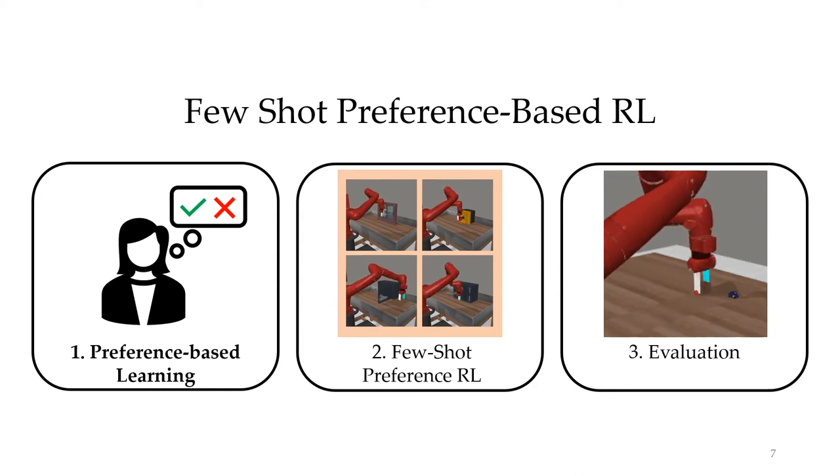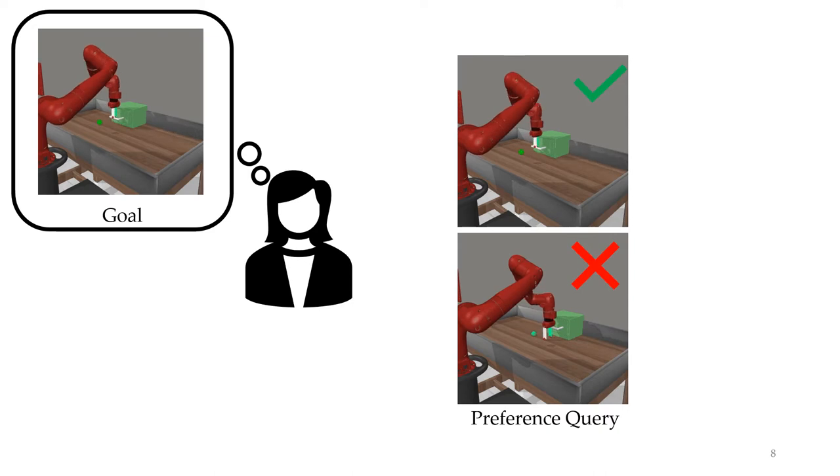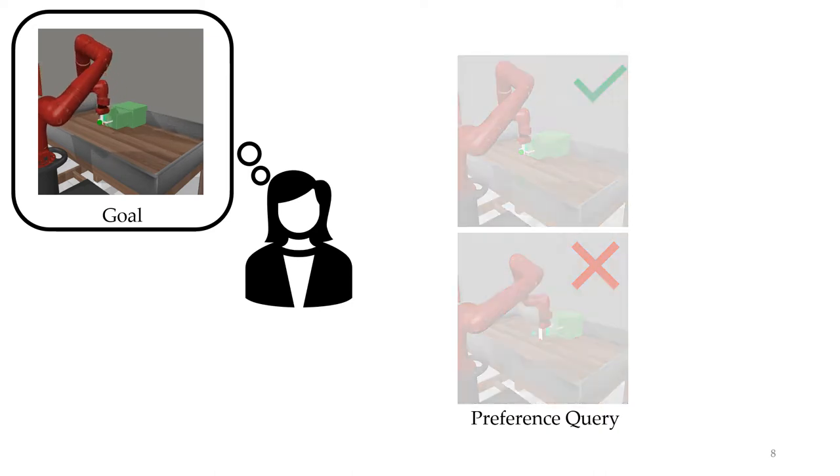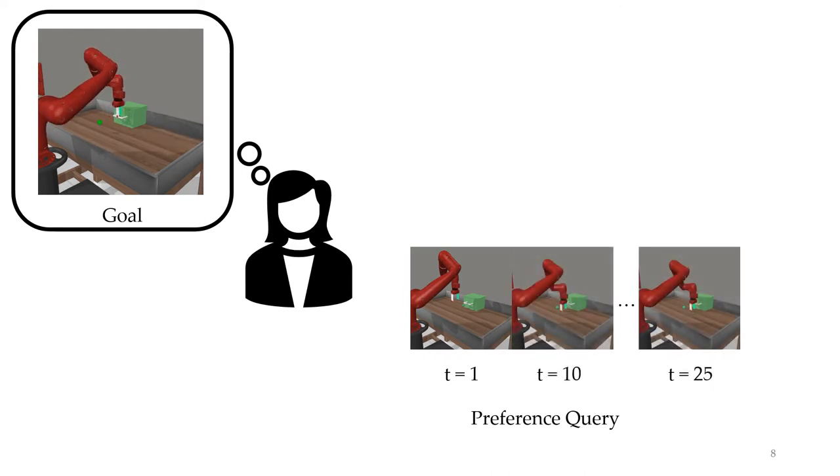Let's start with preference-based learning. Let's say we want to teach a robot to open a drawer like so. Preference-based learning repeatedly shows users different options and asks them which they prefer. In practice, these options are often snippets of behavior. In this first frame, we see a robot in front of the drawer, and then it gets closer, and then it ultimately slams into the handle. This might be one option that we show a user. Then we'll have another option.